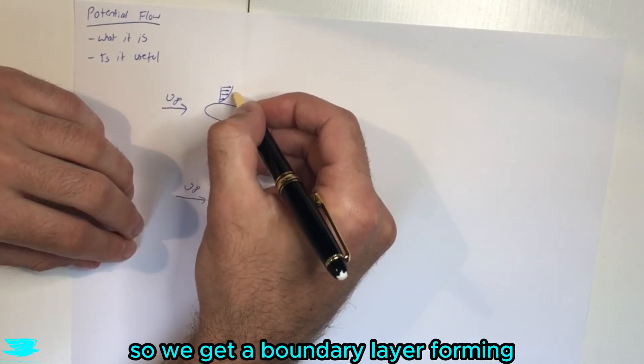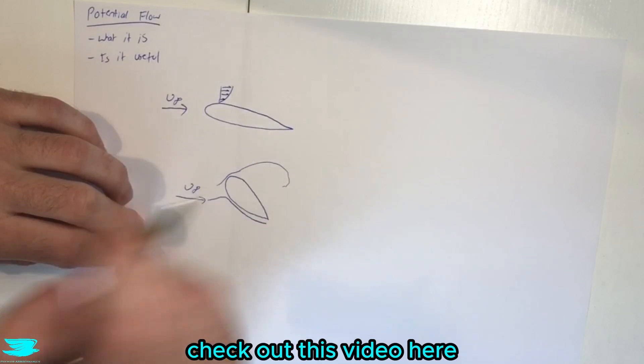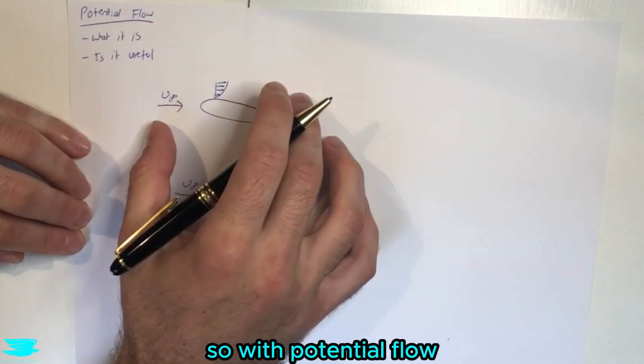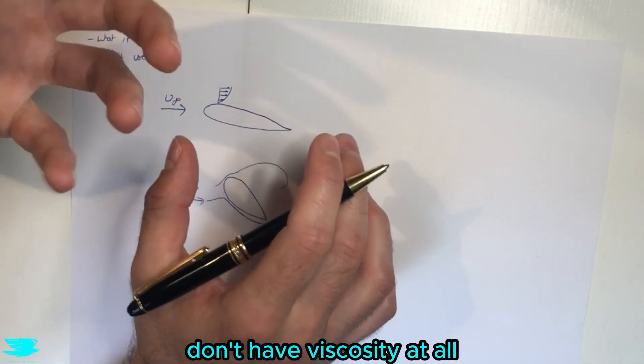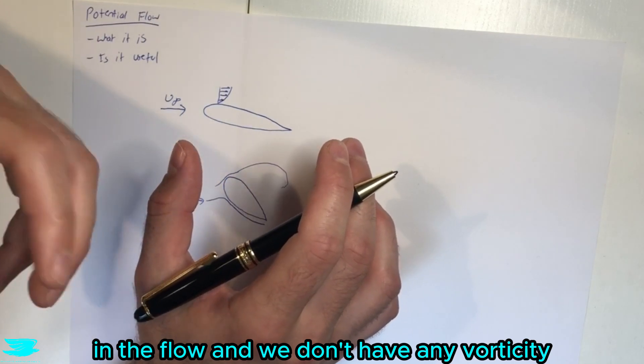So we get a boundary layer forming, and if you don't know what boundary layers are, check out this video here. So with potential flow, what this means is that we don't have viscosity at all in the flow and we don't have any vorticity.